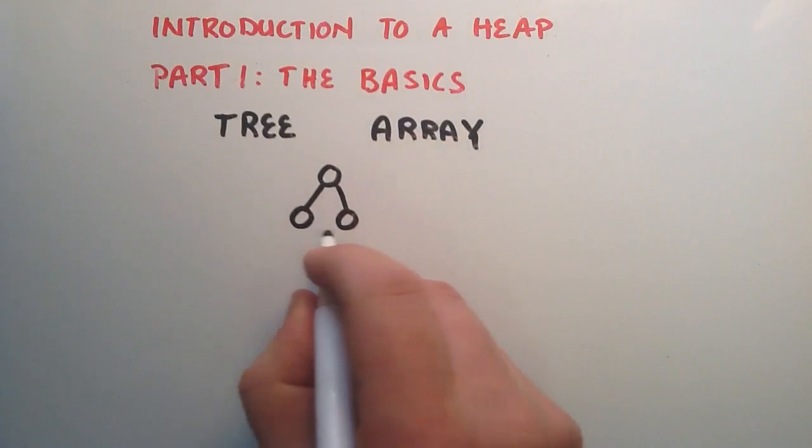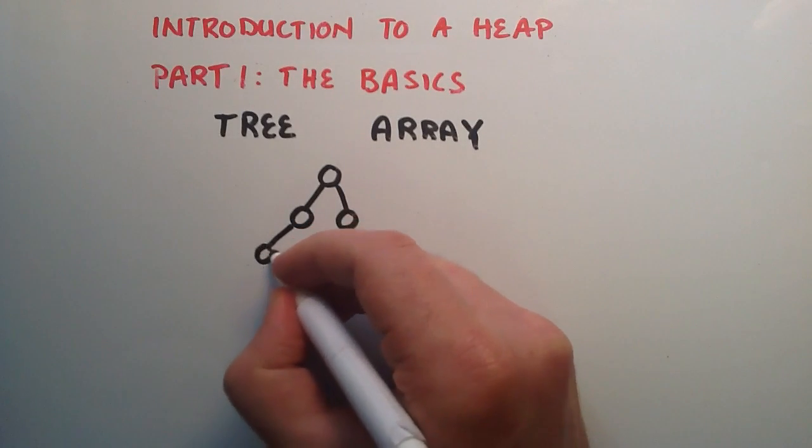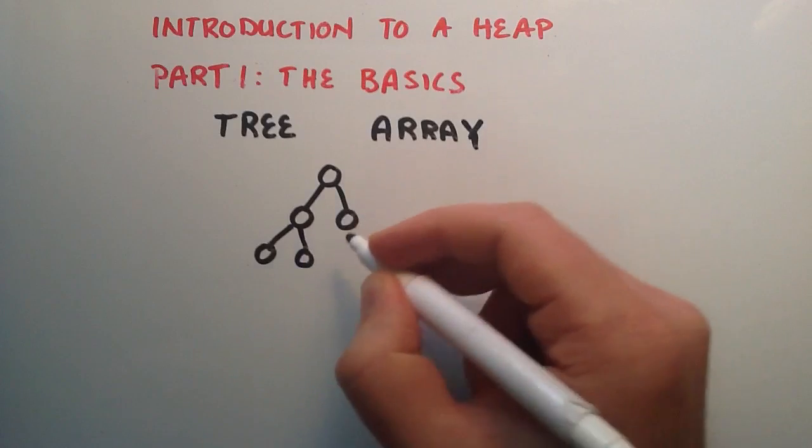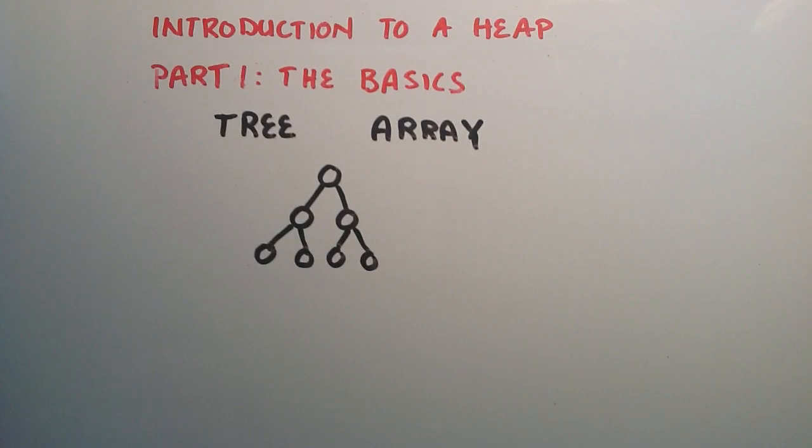And then once a row is complete, we simply move down to the row below, and then we just fill it in left to right. And we just continue to go all the way across. And so that's the basic structure of a heap.